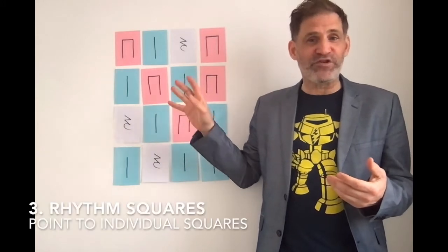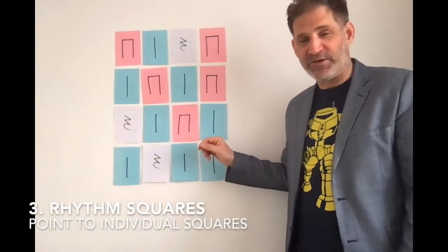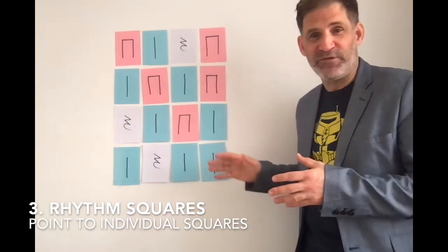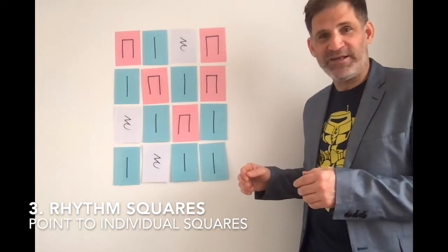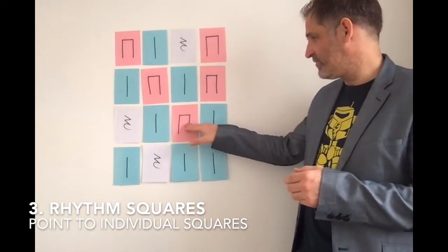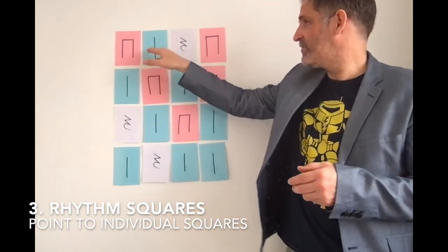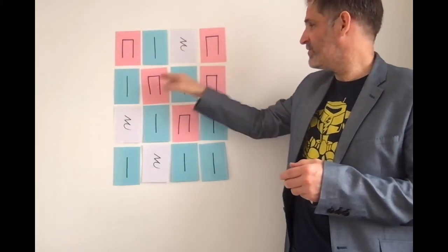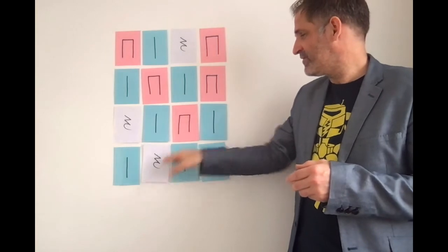Instead of going by row, you could point to different rhythms on the grid and have the children follow along. For example, I could go like this. All right, everyone, clap the rhythm that I point to. One, two, ready, go. And so on.